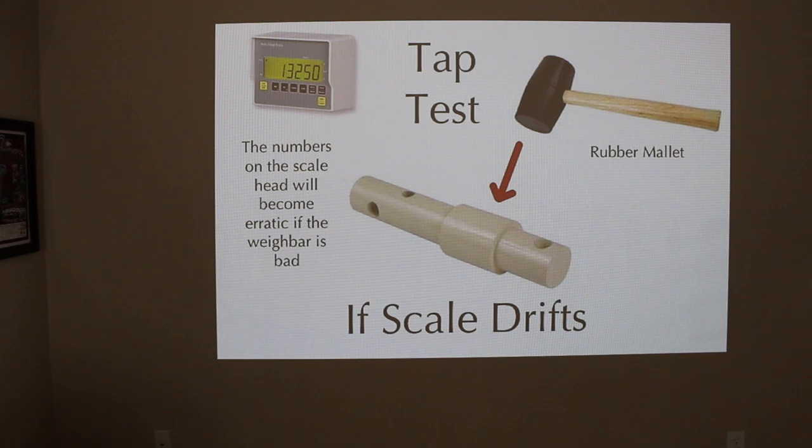The tap test will probably show you if you have a loose gauge. What you would do with this is you would zero out the monitor and then tap on the sensor can, which is the wide portion of the weigh bar. That's where all the electronics are housed. If you tap on this, it's going to cause vibration and then you'll see the indicator either increase in weight or decrease in weight if there's a problem.